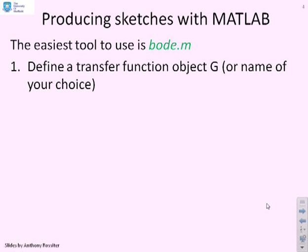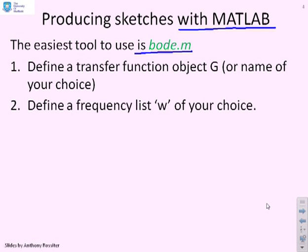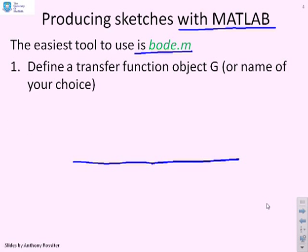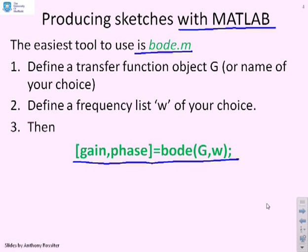The first question is how do I produce sketches, and we're going to suggest starting with MATLAB before moving to doing it by hand. The easiest tool to use in MATLAB is bode.m. You define a transfer function object G, define a frequency list omega of your choice — the frequencies you're most interested in — and then the command you use is: [gain, phase] = bode(G, omega), where G is your transfer function object and omega is your frequency list.